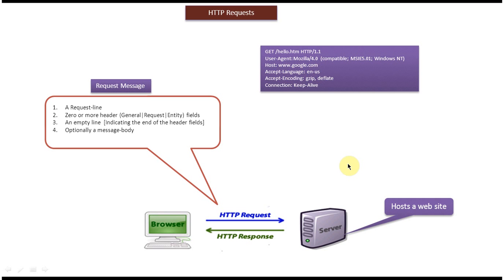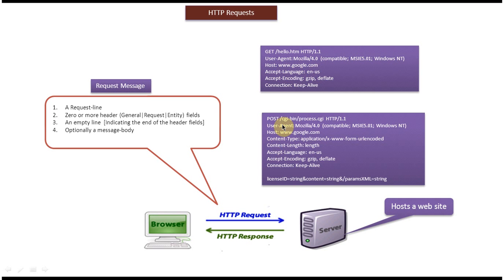Here it is saying: GET hello.htm from the host google.com. Next we will see the POST request message. The first line is the request line, from User-Agent up to the Connection part is the request header, and then we can see the empty line or blank line indicating the end of the header fields, and the last part is the optional message body.